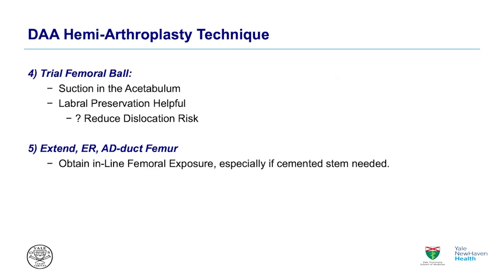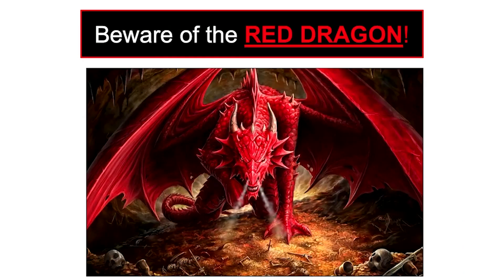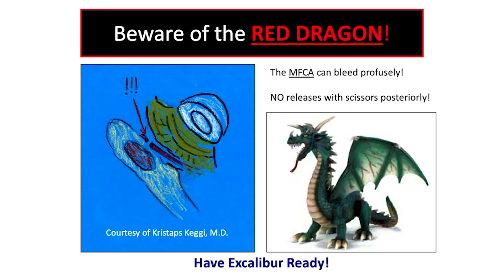We'll trial the femoral ball — extend, externally rotate, adduct the femur. Get that inline femoral exposure, especially if you're going to cement with a larger stem. That's the movement to gain access to the femur, just as Dr. Goldberg showed with his exposure. Beware of the MFCA in the back — you don't want to agitate that with a scissor. Be careful during your release; that's where it's often located in the back corner of the hip.